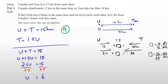The question asks: if they both leave home at the same time and travel towards each other, how far from Yu's house will they meet? The answer is 6 kilometers. Checking: Yu travels 6 km; 6 times 1.5 gives Tom's distance of 9 km. And 9 plus 6 equals 15 km — matching the original problem.